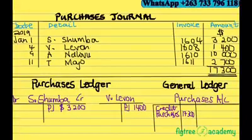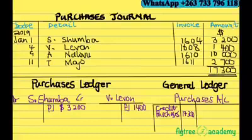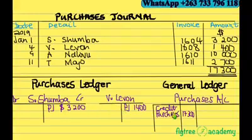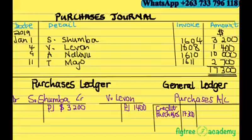You must also check that the sales journal is the opposite. The sales journal posts the total to the credit of the sales account in the general ledger, and then debits individual accounts. Here it is the opposite — we credit individual accounts and debit the Purchases account in the general ledger. That is the end of our lesson. I want you to attempt an exercise in the frameworks.